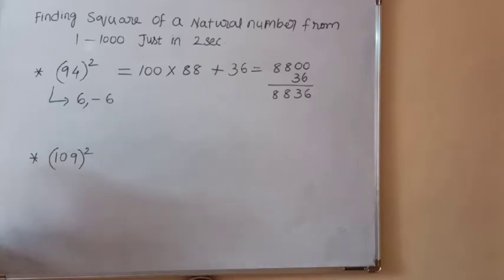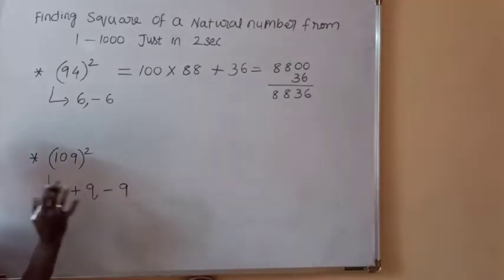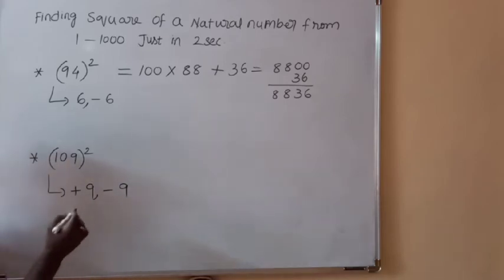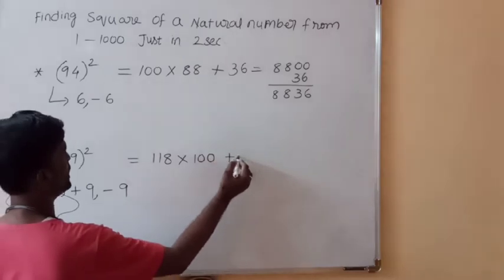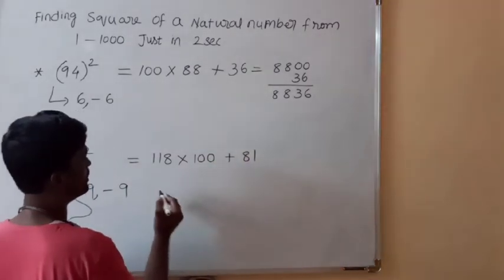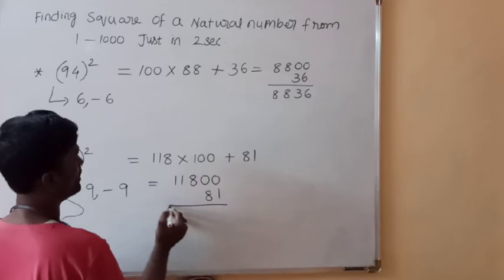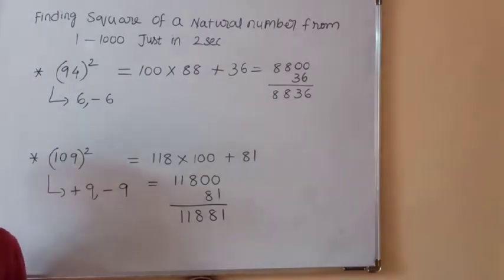For 109 square, add and subtract 9, because 109 minus 9 is 100, where unit and tens digits are both 0. 109 + 9 is 118, 109 − 9 is 100, and 9 square is 81. So 109² = 118 × 100 + 81 = 11800 + 81 = 11881.